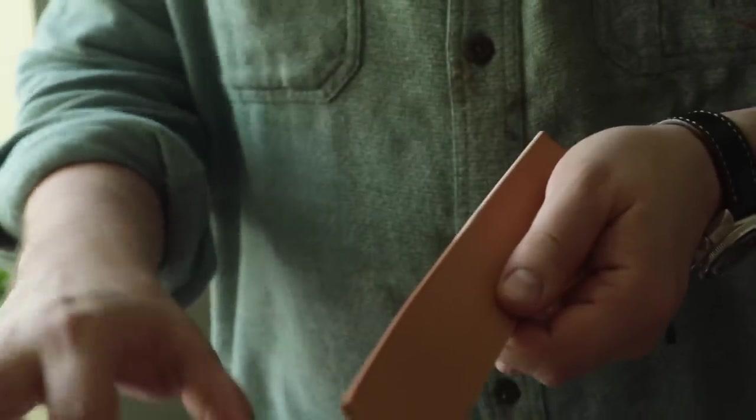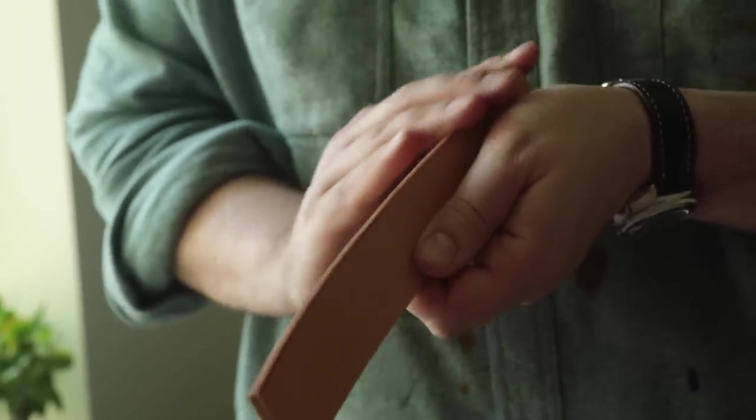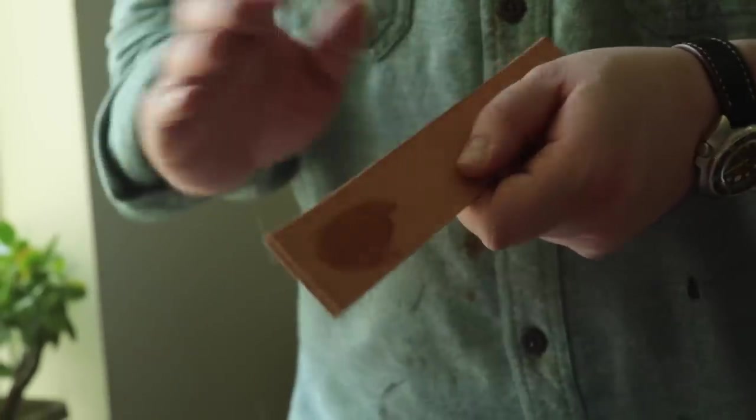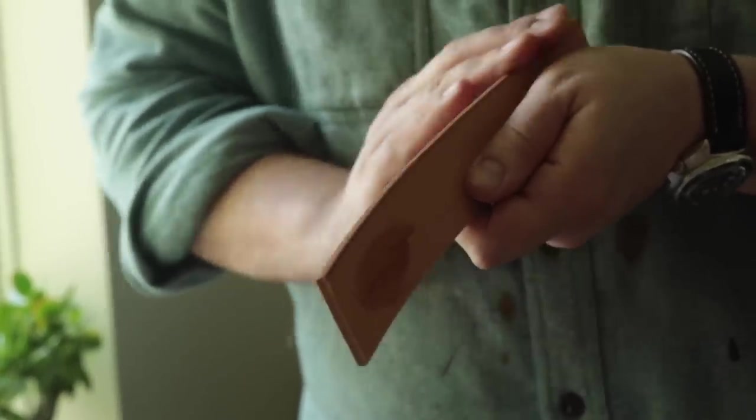You've seen us use this plenty of times if you watch our videos. What I like to do is apply a little tiny bit with my finger. The nice thing about gum trag is if you get it directly on the leather, if you don't touch it and just let it dry, it's not going to make any water spots. It's just going to dry up and go away. So now once we have it on, I'm going to take my wood handle.